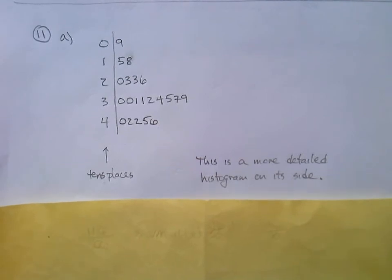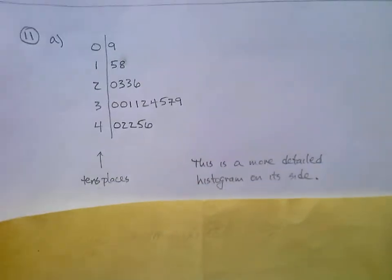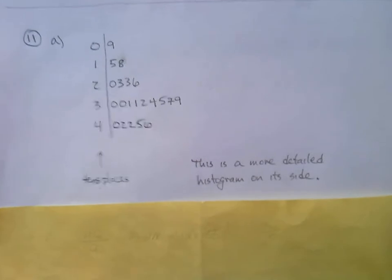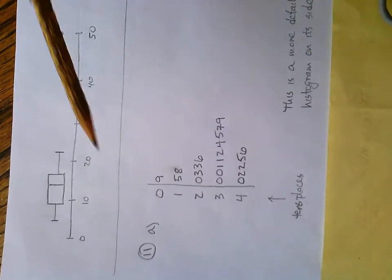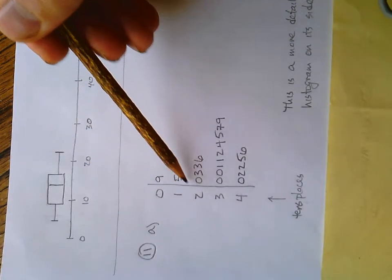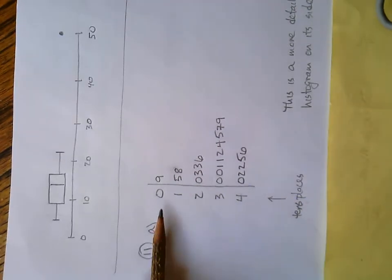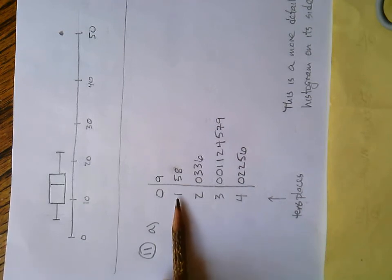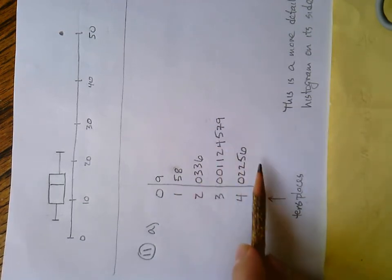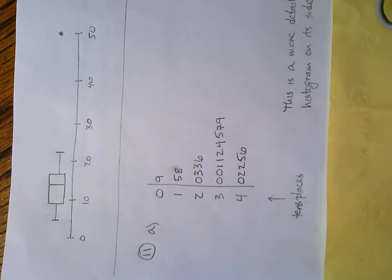So that's my note. This is a more detailed histogram on its side. What do I mean by on its side? Well, this is kind of nice that I can do this on camera, right? If you were to, let me just take the camera and rotate it. If I was to turn the camera this way, you can think of these as the bins. Bin number one, bin number two, three, four, and that's how high they are. Like how many digits there are kind of makes, you know, and that's kind of nifty.